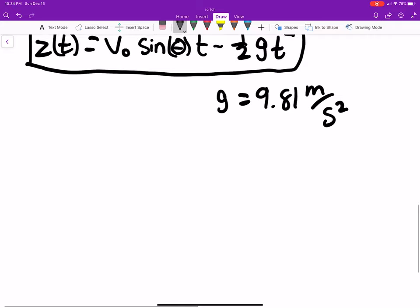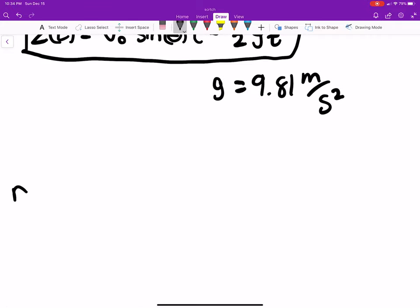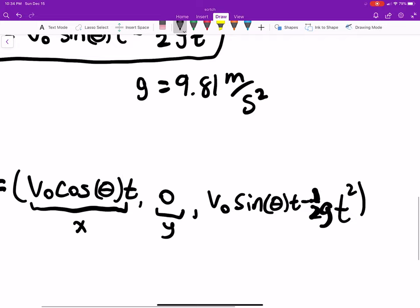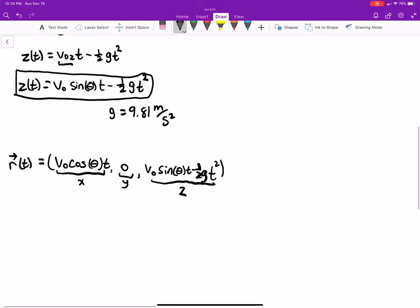So awesome, good job. We found that r as a function of time is equal to v naught cosine of theta times time - this was our x - zero, that was our y because the ball's going just due east, and then v naught sine of theta times time minus one half g t squared, where this is your z. So okay, we have our function. This will tell us our position at any time t.